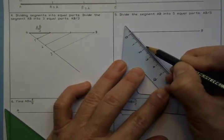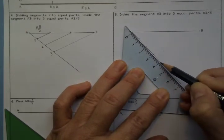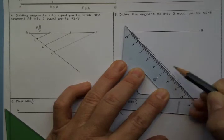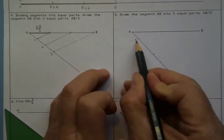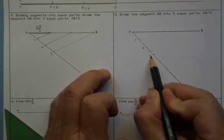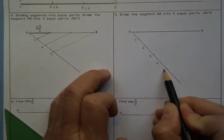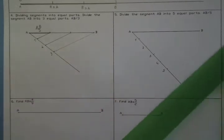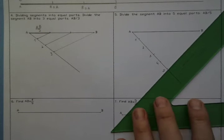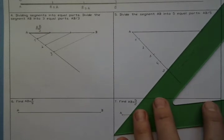One, two, three, four, and five. We are going to label the points. Now, next step, I'm going to join five to B.